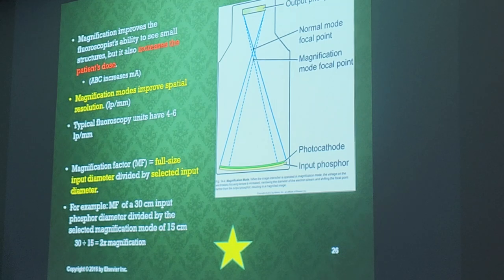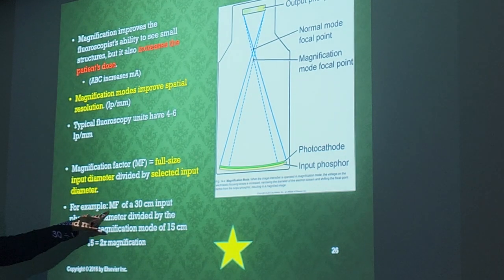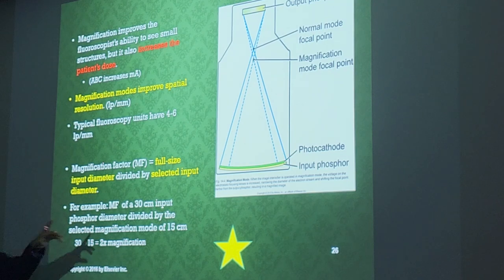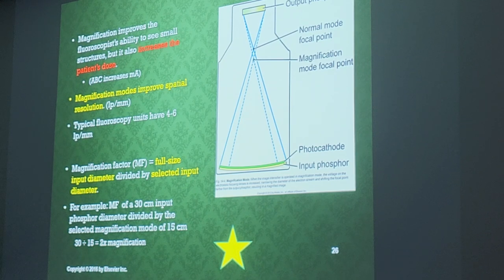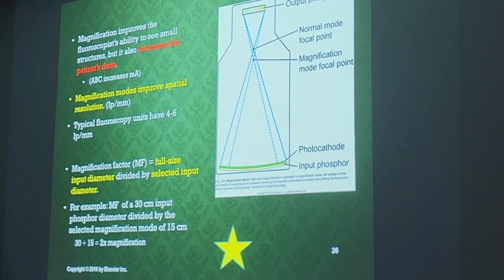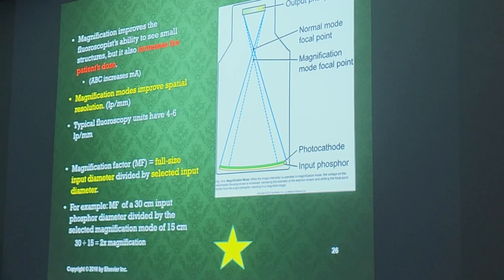If you have a question regarding magnification factor, it's straightforward. If you want the magnification factor of a 30 cm input phosphor and you're using 15 cm, you take 30 divided by 15 — the magnification factor is two. You take the full width divided by the centimeters you're using. For example, a 30 cm input phosphor using 23 cm: 30 divided by 23 gives your magnification factor.